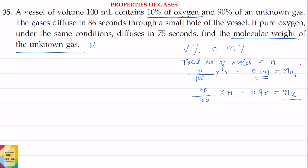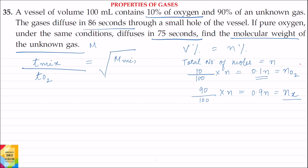So, Nx denotes the number of moles of unknown gas. The time taken for the mixture of gases to diffuse is 86 seconds, and the time taken for pure oxygen under the same conditions to diffuse is 75 seconds. Applying the formula: Tmix divided by TO₂ — where Tmix is the time taken for the mixture to diffuse and TO₂ is the time taken for oxygen to diffuse — this equals the square root of the molecular mass of the mixture divided by the molecular weight of oxygen, that is 32.